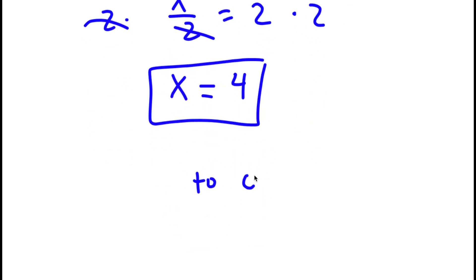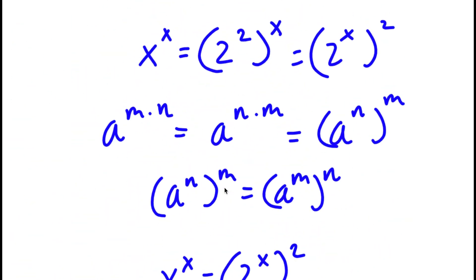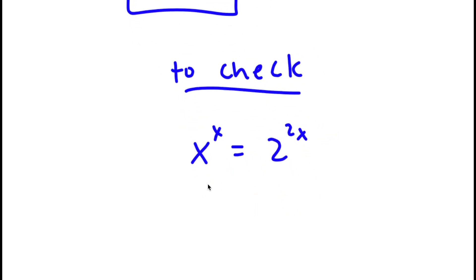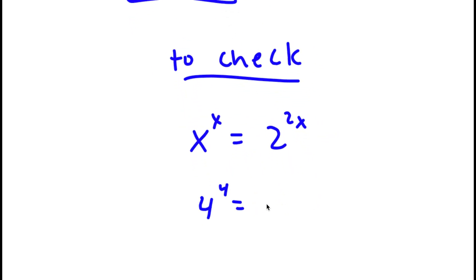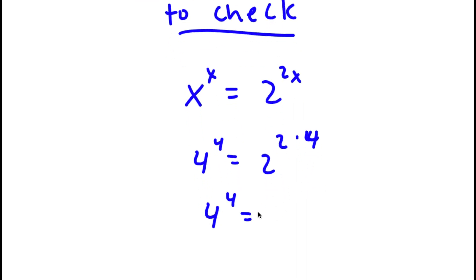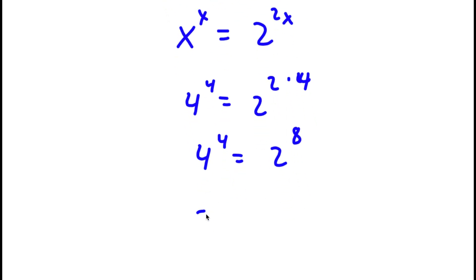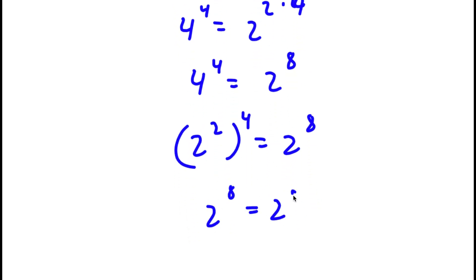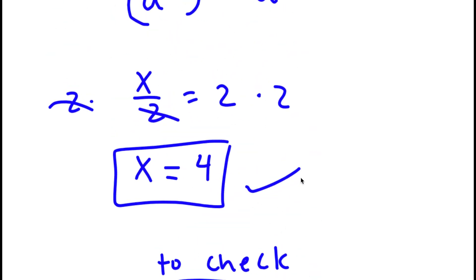Now to check: my original equation was x to the power of x equals 2 to the power of 2x. With x equals 4, I have 4 to the power of 4 equals 2 to the power of 2 times 4, which is 2 to the power of 8. Since 4 is the same as 2 squared, I have 2 squared to the power of 4, which equals 2 to the power of 8. So 2 to the power of 8 equals 2 to the power of 8, confirming my solution is correct.